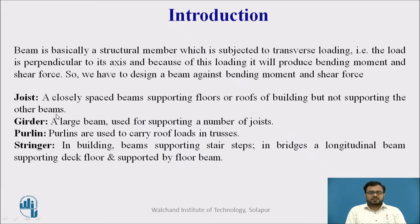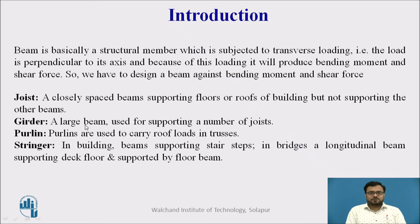There are various terminologies for beams. The first one is a Joist — a closely spaced beam supporting floors or roofs of a building but not supporting other beams; it is a type of secondary beam. A Girder is a large beam used for supporting a number of joists. Purlins are used to carry roof loads in trusses; they are also a type of beam.